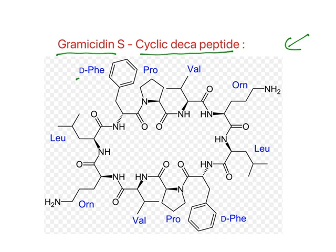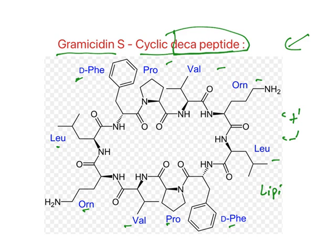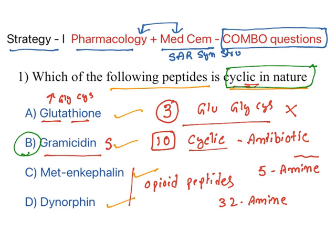The gramicidin S structure is a cyclic decapeptide with ten amino acids. It is effective against gram-positive and gram-negative bacteria and acts on the lipid membranes of bacteria. This is an antibiotic that structurally has a cyclic decapeptide framework.